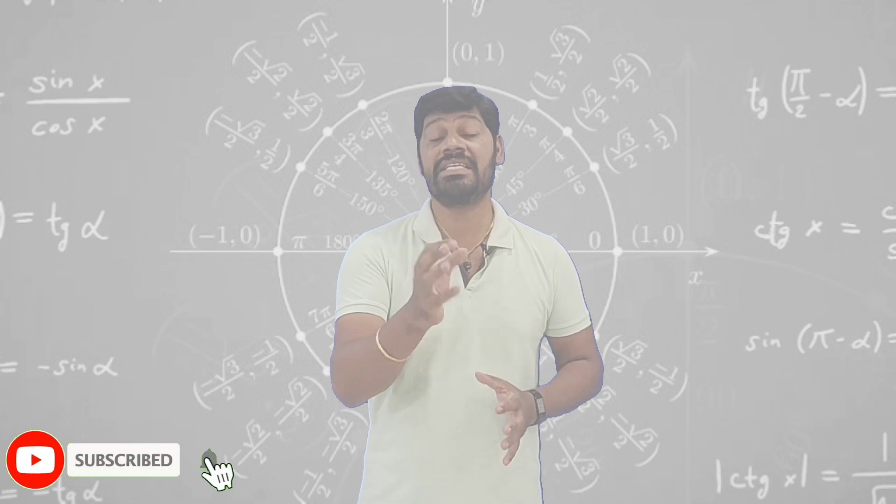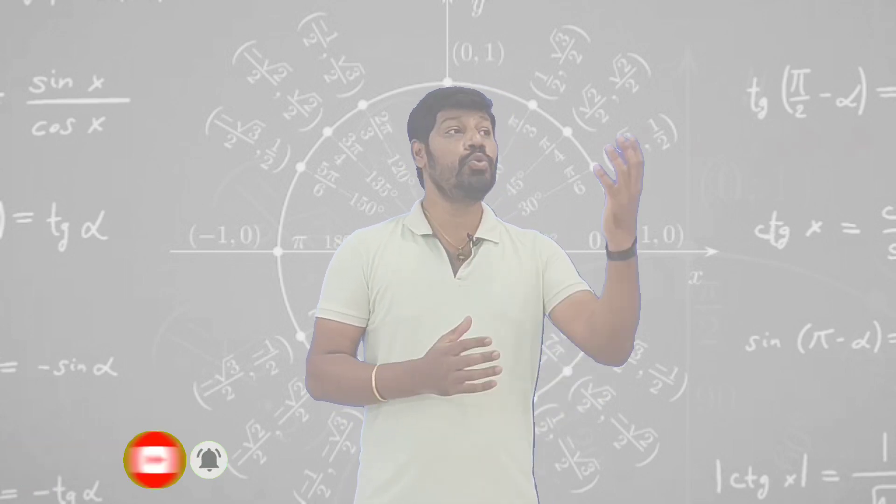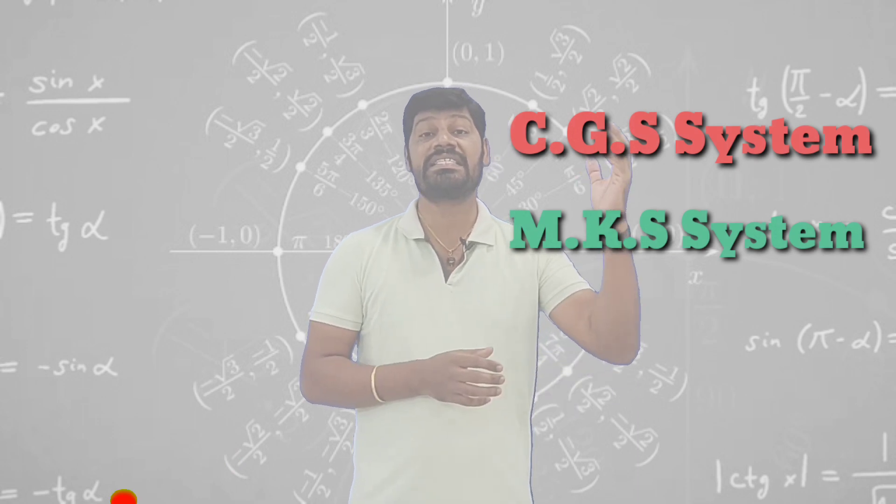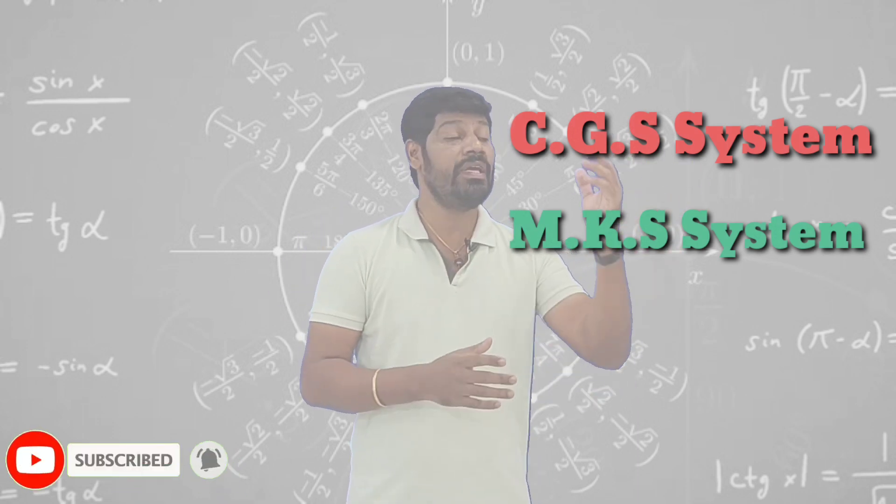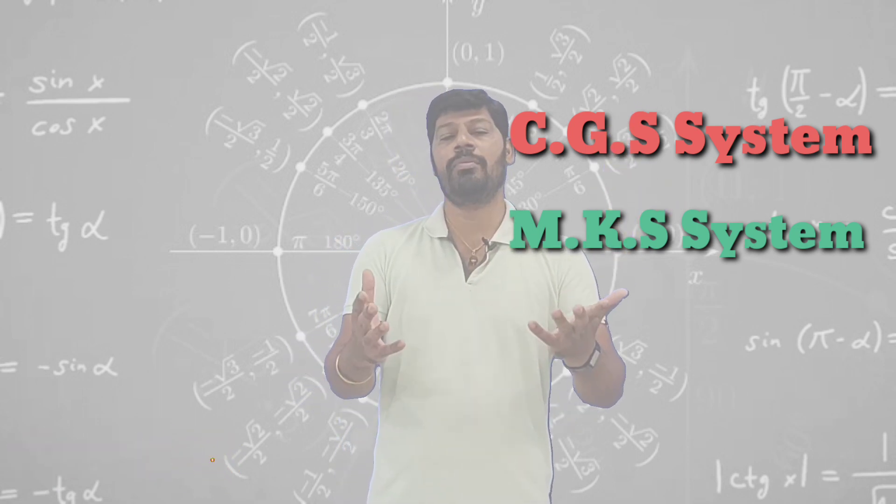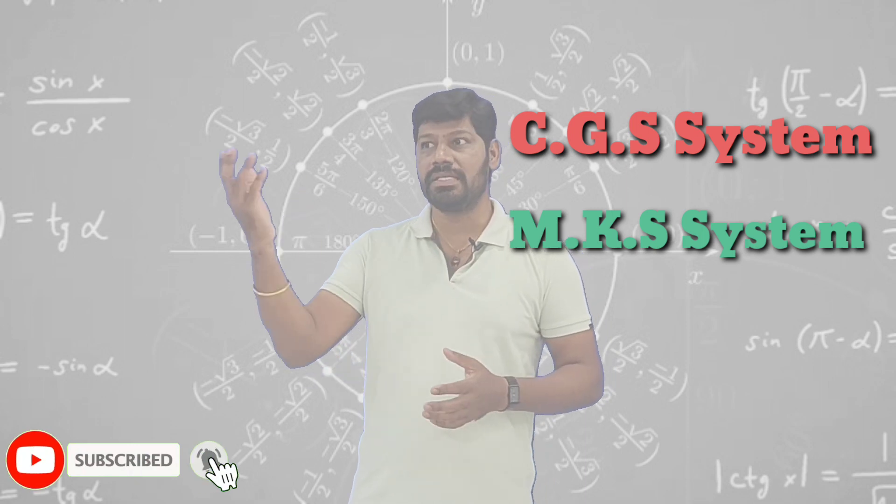To understand this, we need to understand the measuring systems of angles. In physics, we have two different measuring systems like CGS system and MKS system. To measure the same quantity, we have two different systems. Similarly, in geometry also, to measure the angle, the most familiar thing is degrees.